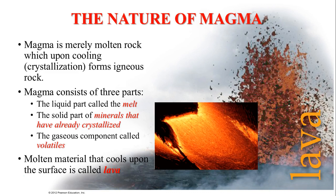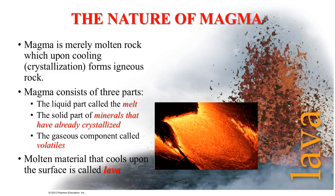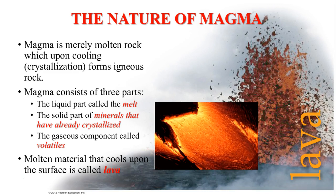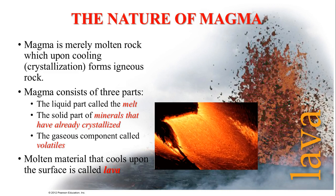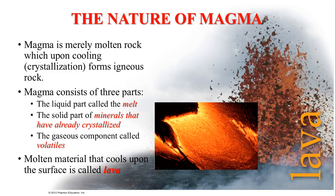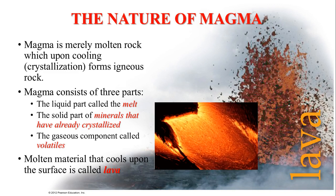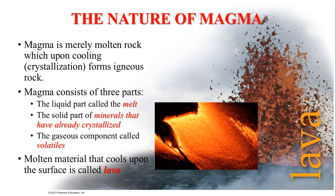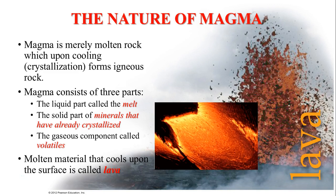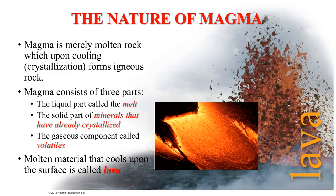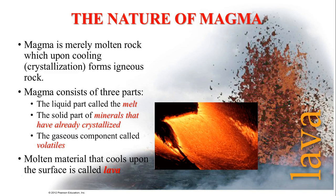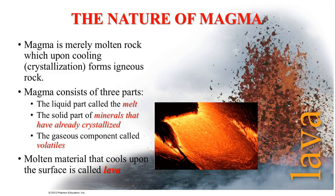Where we're going to begin with igneous rocks is understanding the formation of magma. Whenever you start talking about magma and lava, magma is molten rock found beneath the surface, whereas lava is molten material found upon the surface. An igneous rock that forms from lava is actually going to be somewhat different than one that forms from magma.